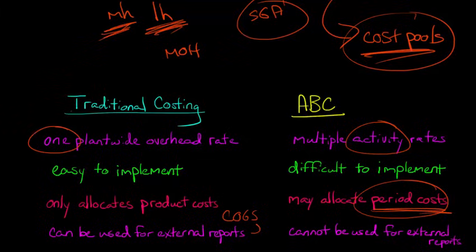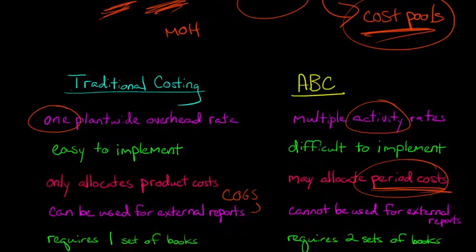But they will not accept activity-based costing. ABC is a lot more subjective, and so we can't use it for external reports whatsoever. It's just strictly for internal purposes to help managers with decision making.